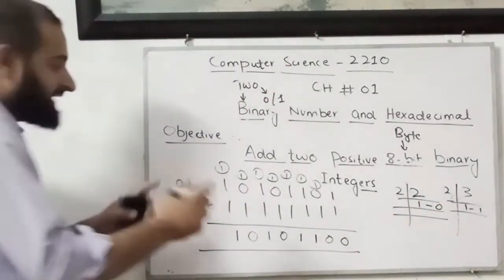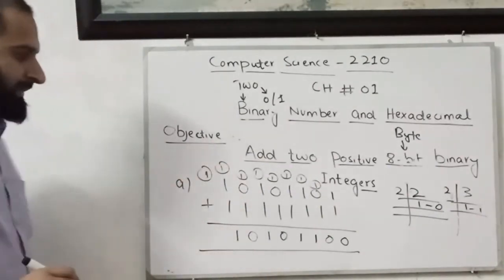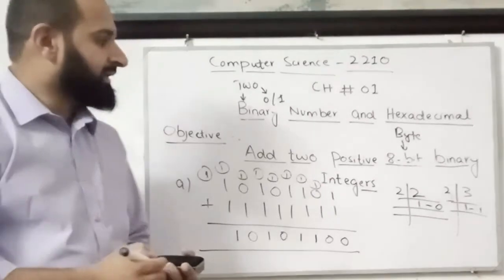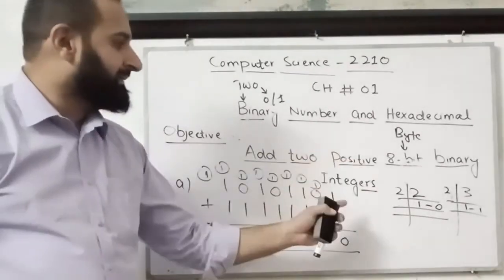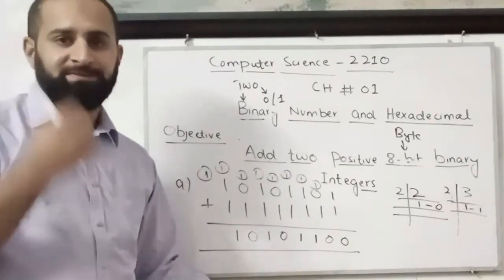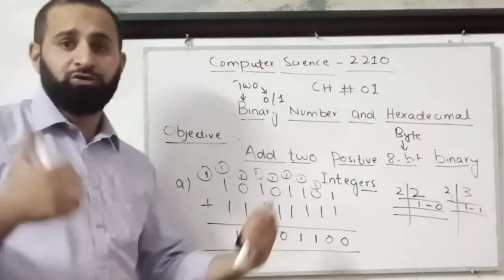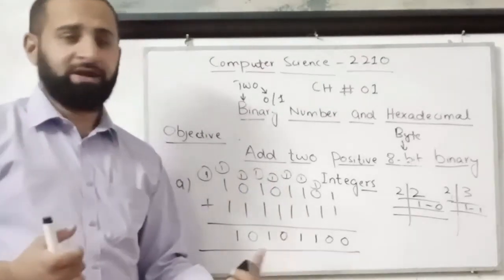The extra bit, the 9th bit will come over here. It will go over here. That's how you can add positive 8-bit binary integer numbers. This is how you will perform the addition of 8-bit binary numbers. So you need to do a lot of practice.